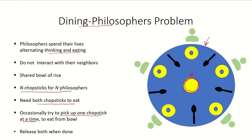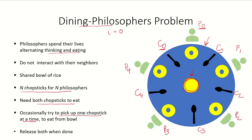If there are five philosophers, let's call them p0, p1, p2, p3, and p4, and there are five chopsticks: c0, c1, c2, c3, and c4. If philosopher p0 wants to eat, he will require chopsticks c0 and c1. So when i equals 0, the chopsticks required are c0 and c1, corresponding to i and i plus 1 modulus 5, because 0 plus 1 modulus 5 gives us 1.